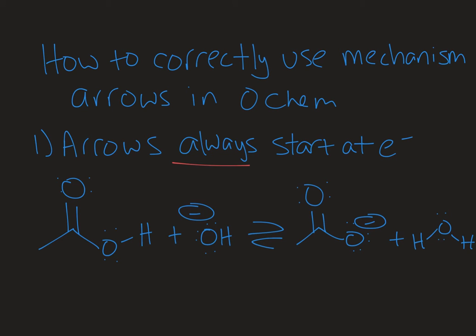Welcome to Chemistry with Caroline. In this video we're going to look at how to correctly use mechanistic arrows in organic chemistry. We use arrows to show how a chemical reaction proceeds, which bonds are broken and which bonds are made, and I like to think of arrows as the language of organic chemistry. They really are the directions for how the reaction proceeds.